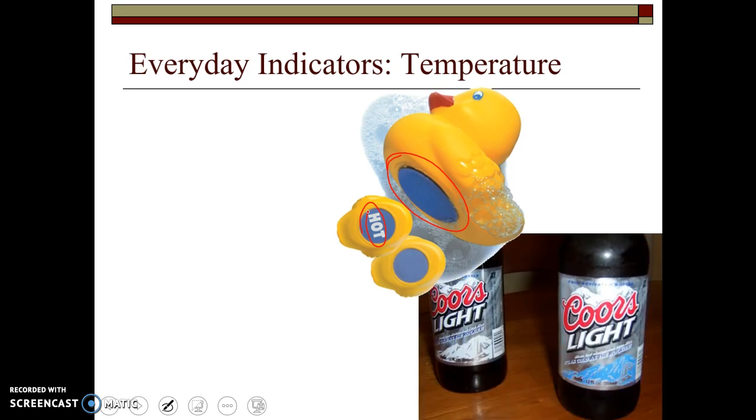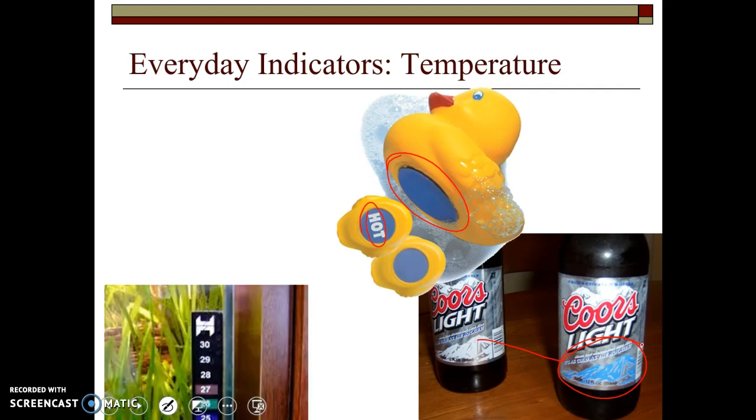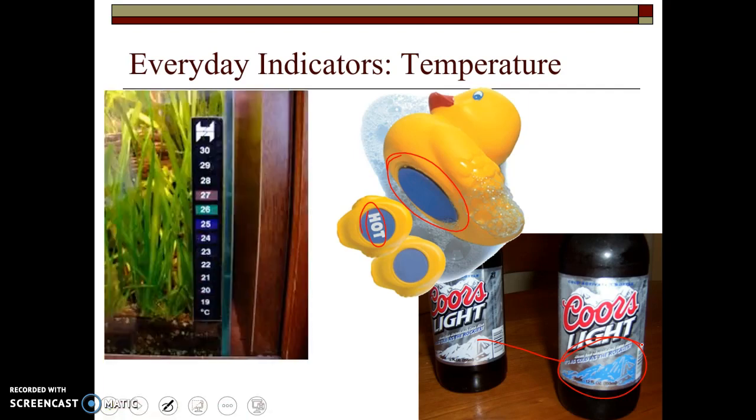Some of you may be familiar with commercials from Coors Light, how the mountains will turn blue if it's properly chilled and it's very, very cold. I think that's what they do. So there's a color indicator, temperature indicator that they have there, where it changes colors depending on what temperature things are in. Some of you may have seen a thermometer type of a thing like this. Sometimes you put these on your fish tanks, and depending on what the temperature of the water is, different colors show up to let you know what temperature that is.